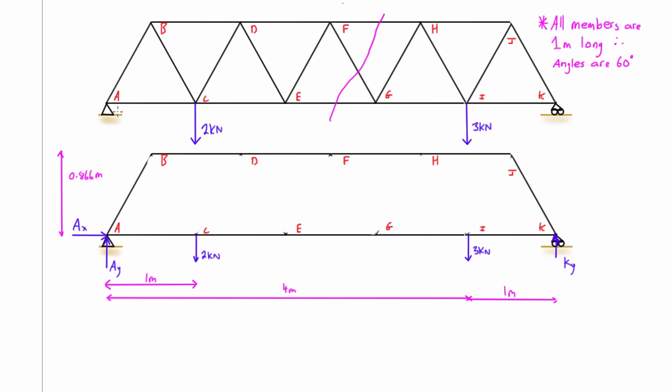Another thing I just forgot to mention was that all of these members are going to be one meter long. And then when we have everything one meter long and they're triangles, then we get these as equilateral triangles so we get all these angles in here as 60 degrees.